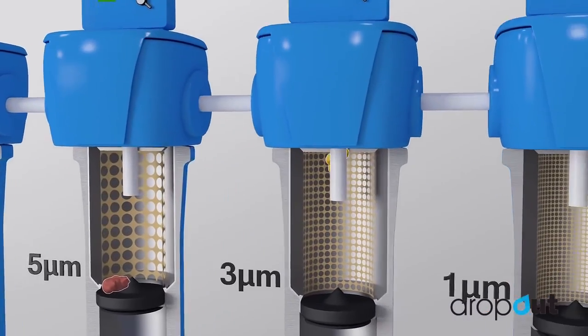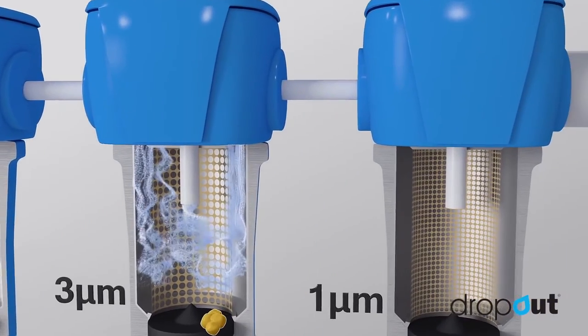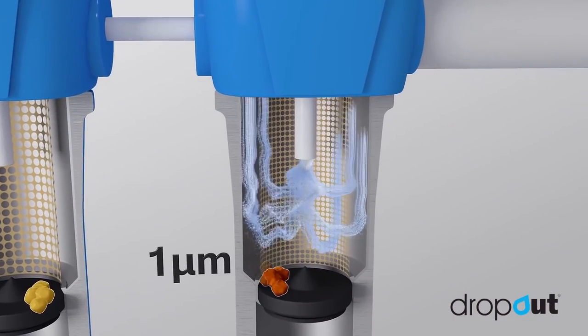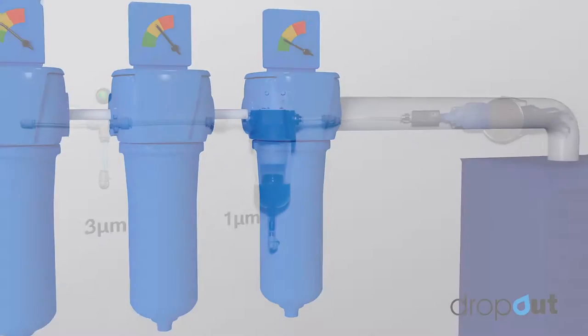Particles are also trapped, and the combination of these droplets and particles clogs the element. This restricts the airflow until replaced.